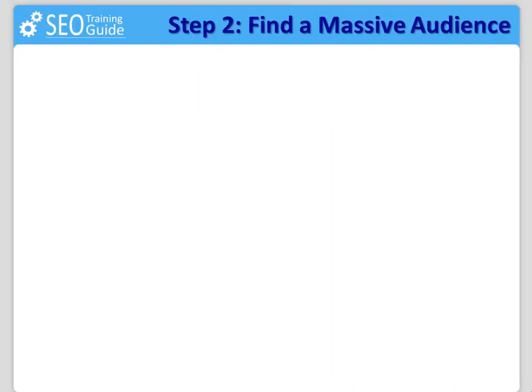Step number two: find a massive audience and guarantee your traffic. Now that we have found the weapon we will use to make money online, it's time to find a hungry audience that perfectly fits into this product. We are going to find people with needs and questions whose answers will be satisfied with the product we will offer to them.